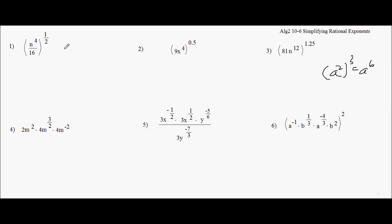Okay, so I can say that this is n to the fourth times one half, and then 16 to the one half. Because this is just this times itself, I can say this is a square root, because this is one half, right? Square root of n to the fourth over 16.